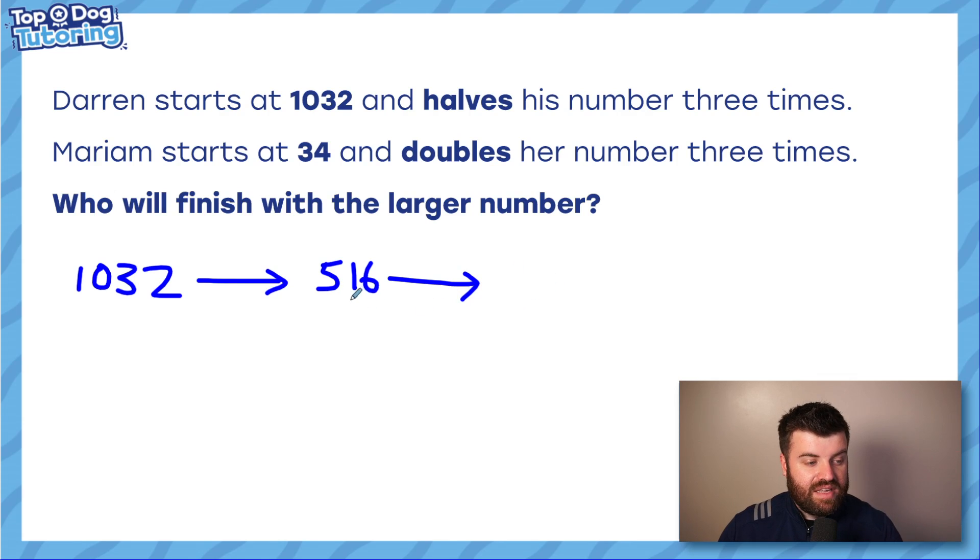516. You could be drawing this out however you like. I'm at the point now where I can do it mentally. You might be able to do that as well. 516, the second halving. Half of 500 is 250. I'm going to actually jot this down. Half of 16 is 8. So I'm going to combine these and now I get 258. Perfect. I've done two halvings now. So I'm going to move on now to the next one.